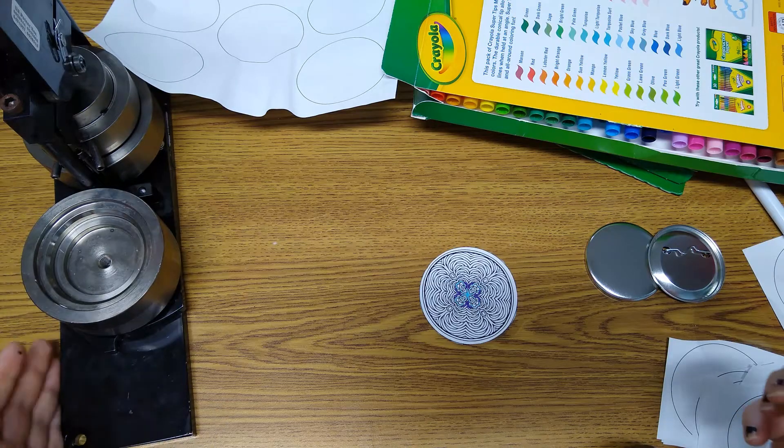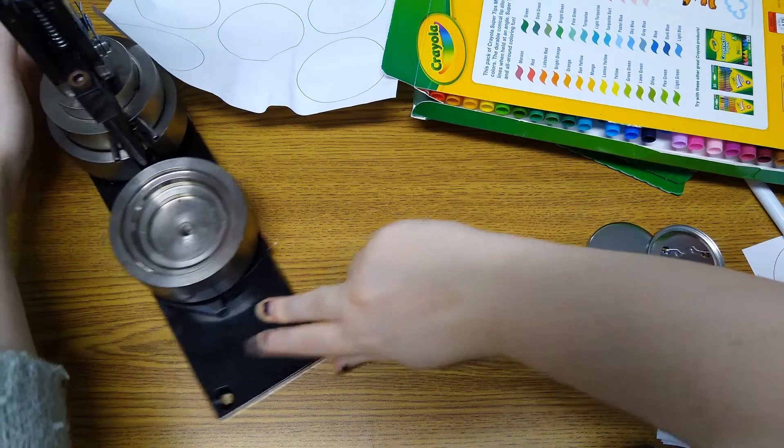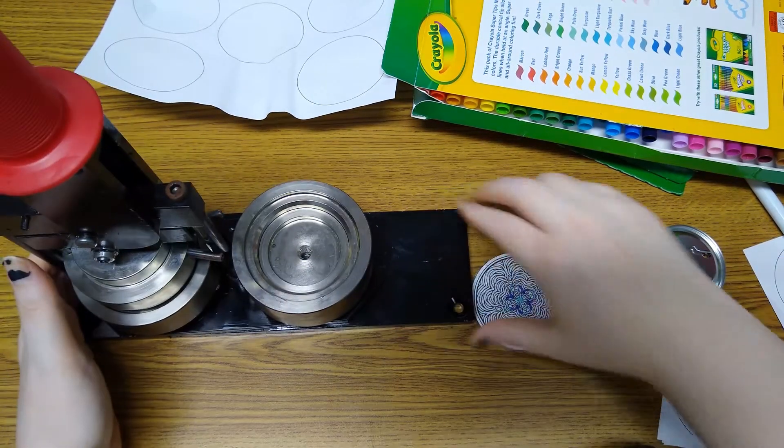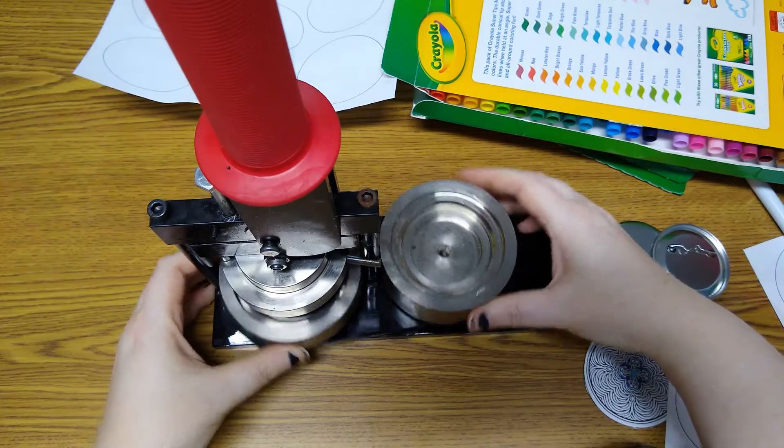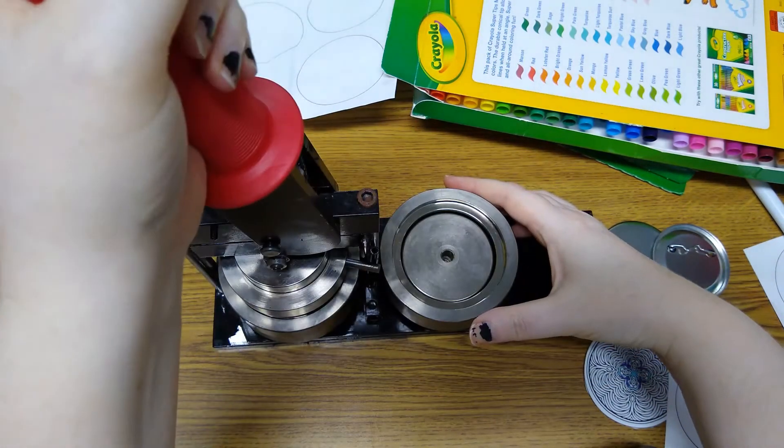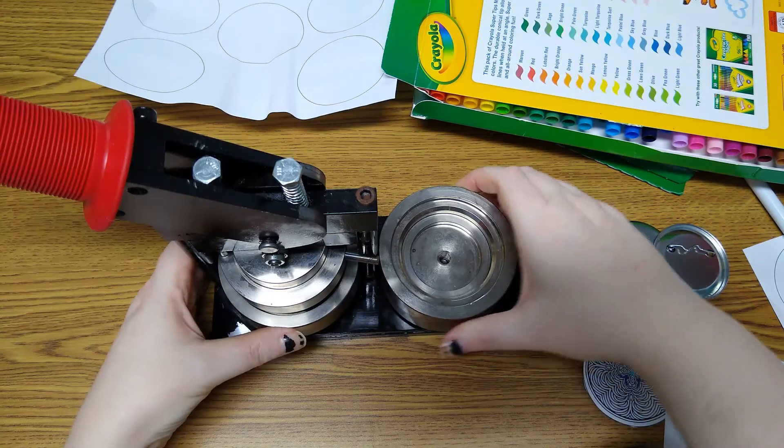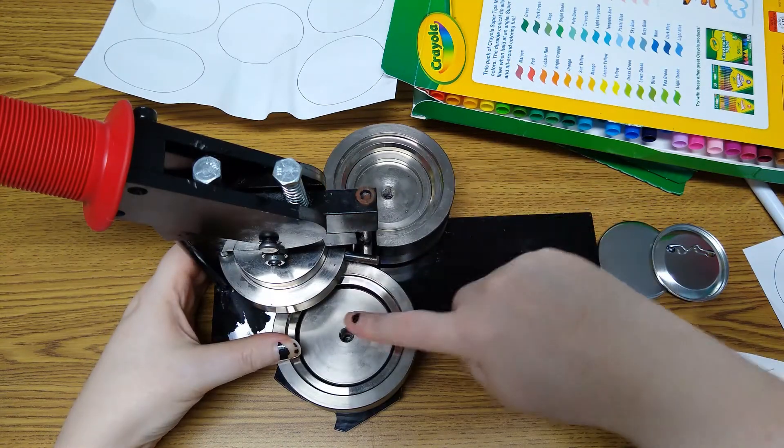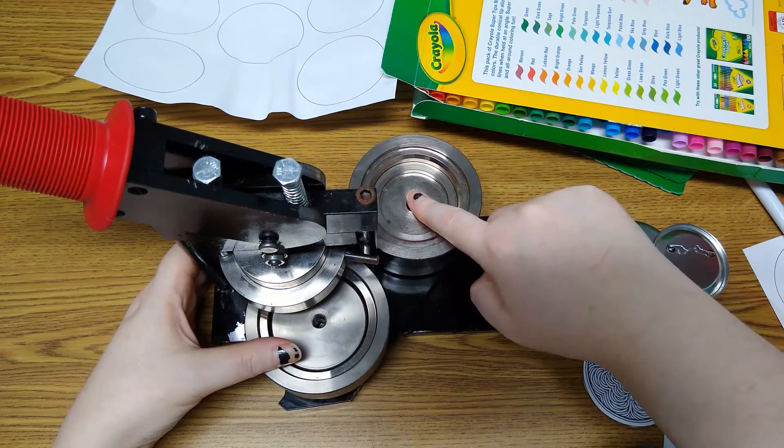Alright, so I am providing you guys the button maker to use. There are two sides to the button maker and then a lever. So of the two sides, the shallow side versus the deep side.